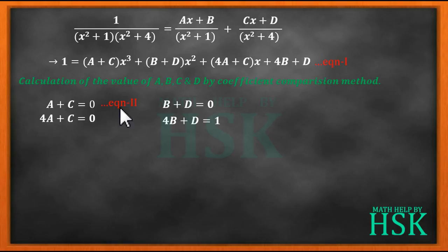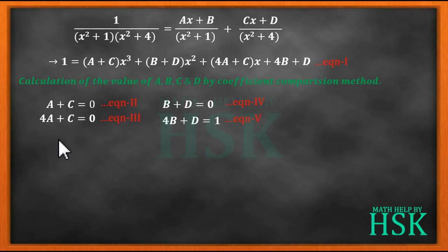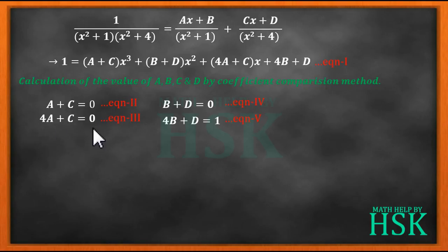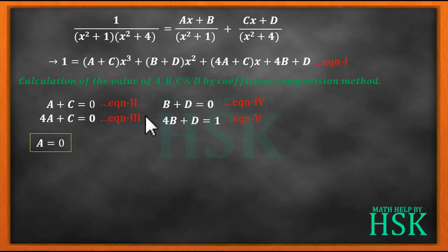We solve equations 2 and 3 separately to get the values of a and c. Since a + c = 0 and 4a + c = 0, subtracting gives 3a = 0, so a = 0, and therefore c = 0.